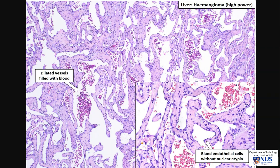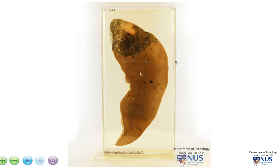Here is a higher magnification view, and we can see these vascular spaces that are quite open. They are lined by very flattened, very bland-appearing endothelial cells, and some of them contain red blood cells. In summary, this is an example of a benign vascular tumor of the liver. It is a fairly common tumor, and it is a hemangioma.